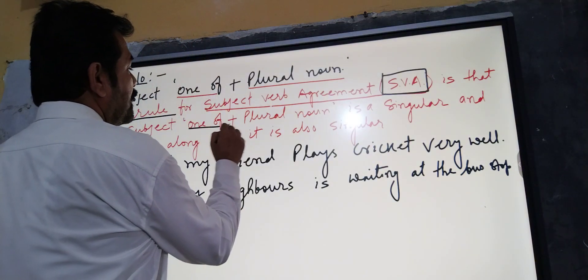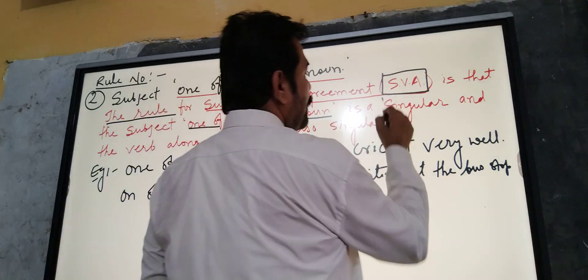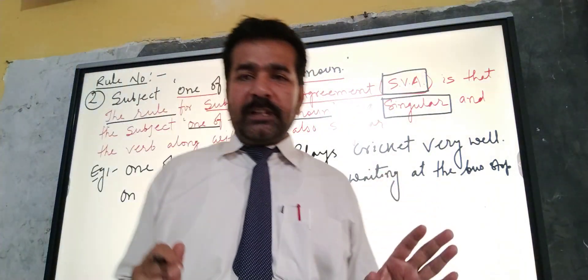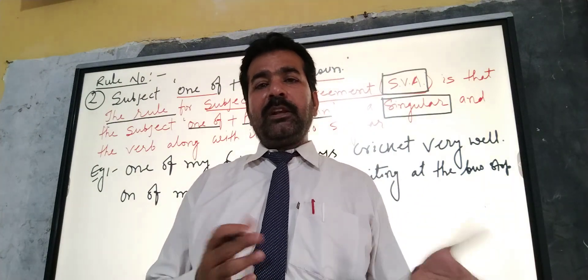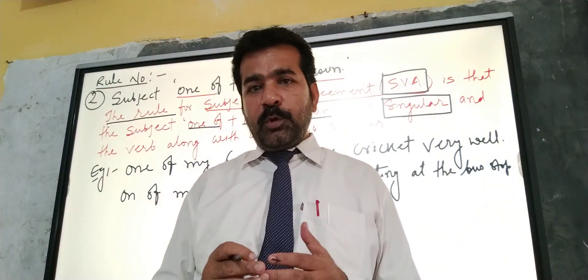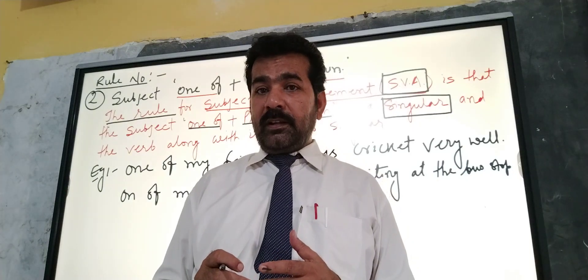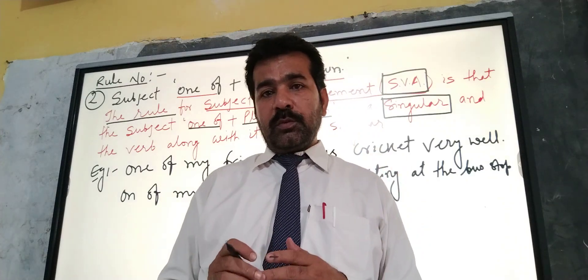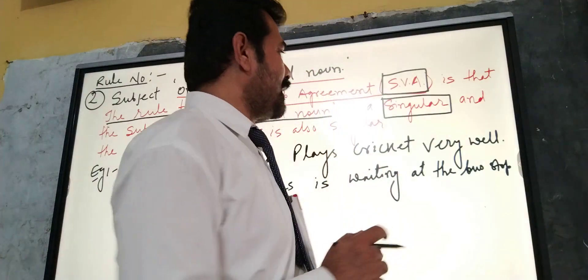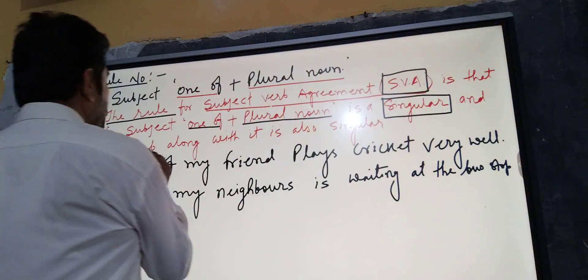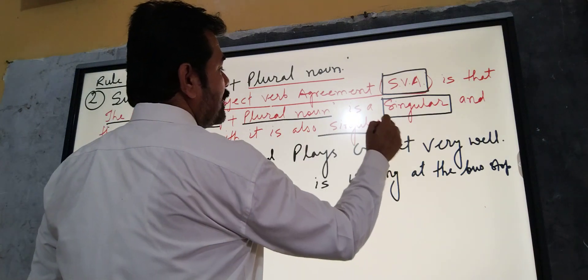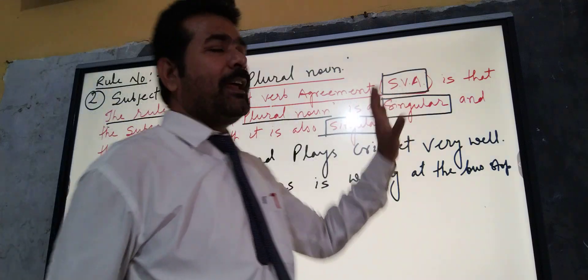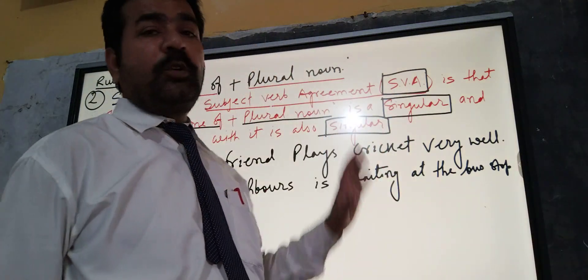One of + plural noun is always singular. No matter what comes after 'one of', even if a plural noun follows, the main subject will always carry a singular verb. Because 'one' is singular, the verb along with it is also singular.